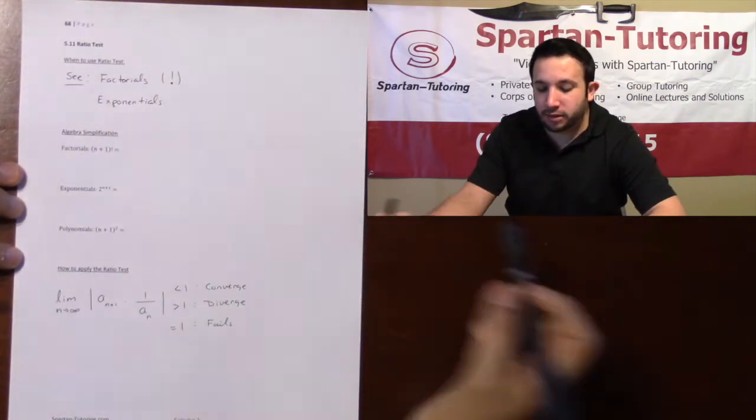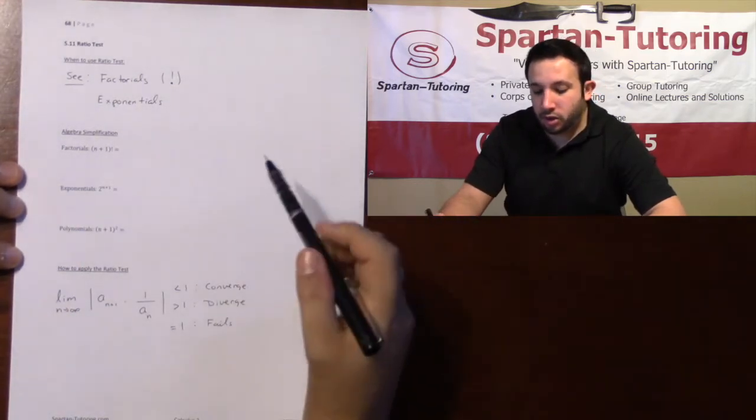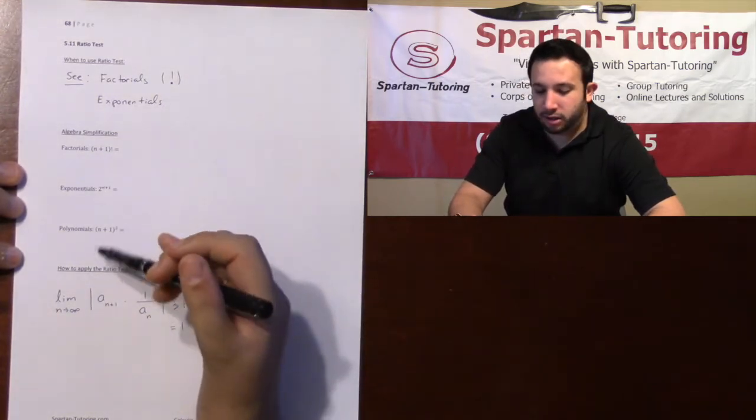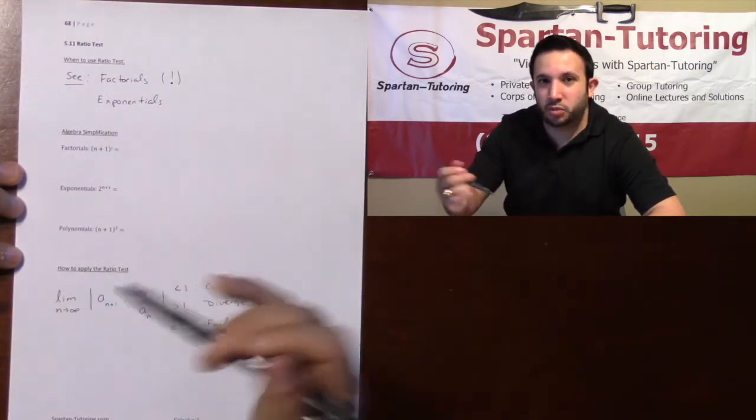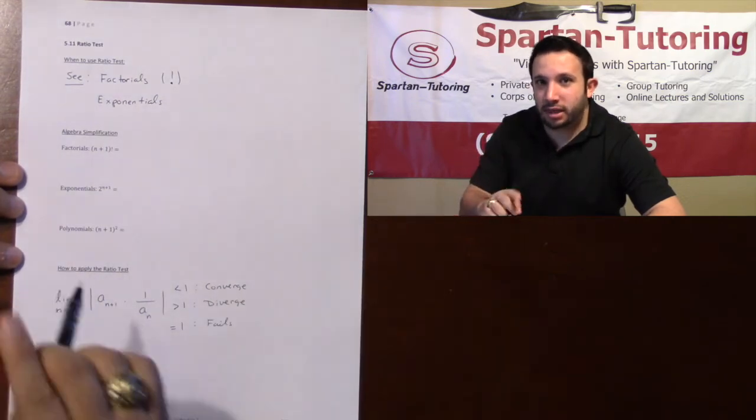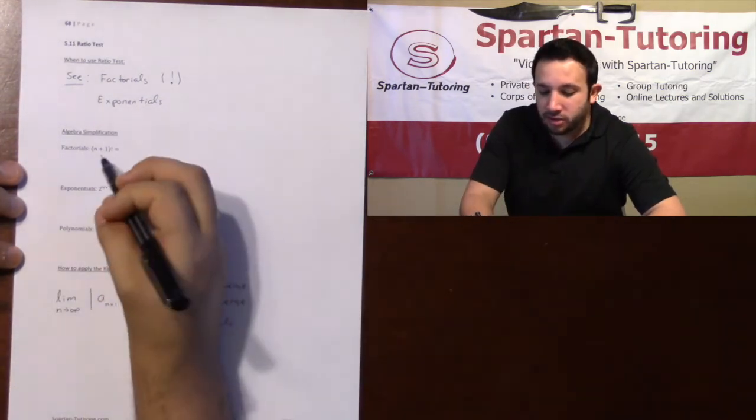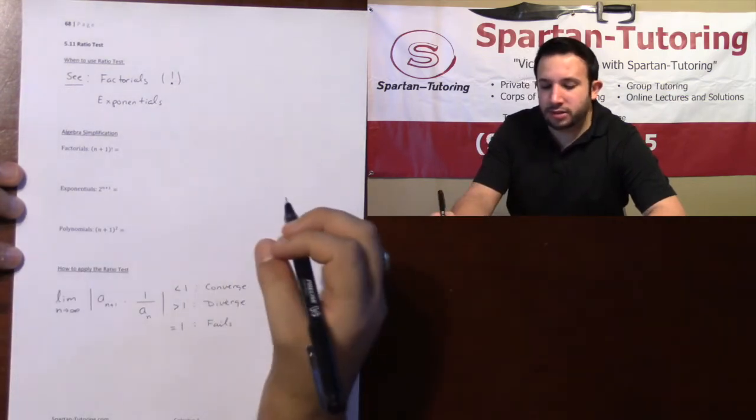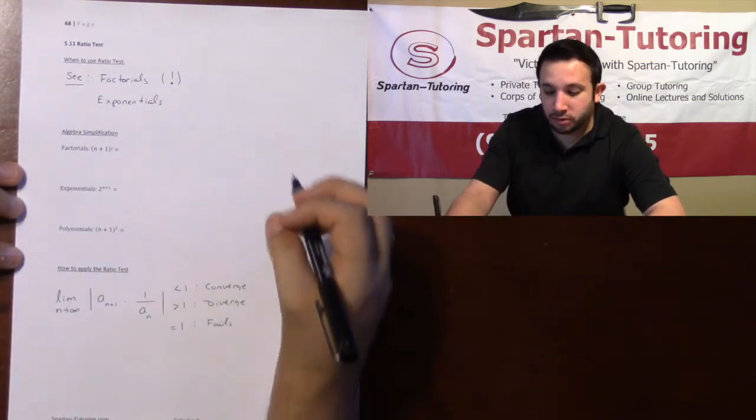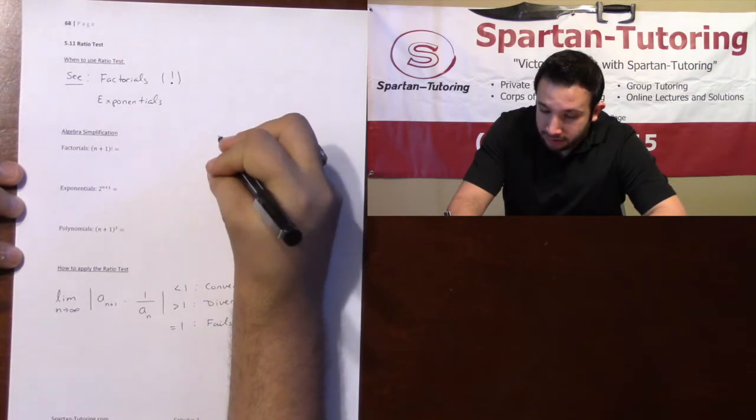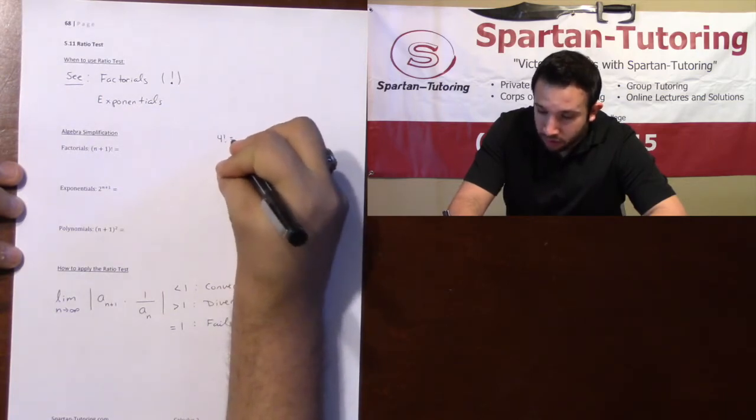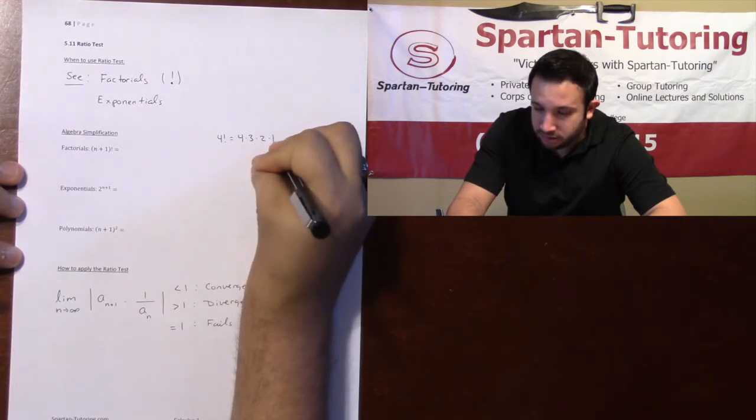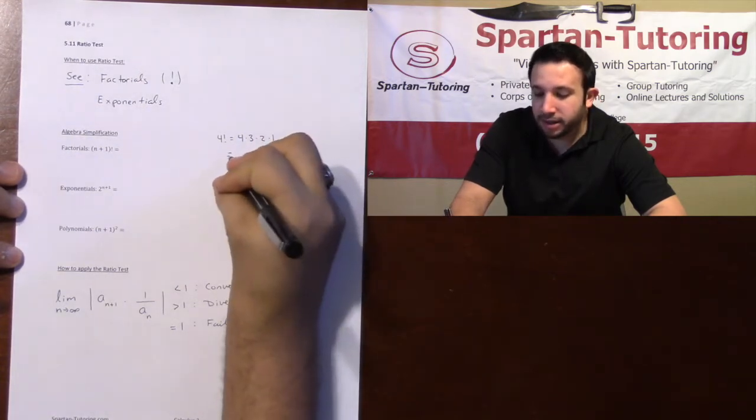What I first want to do before we get into the ratio test is talk about algebraic simplifications within the ratio test that you will be doing. So let's talk about n plus 1 factorial. The first thing that I want you to note is what is a factorial? Well, if you had something like 4 factorial, 4 factorial is 4 times 3 times 2 times 1.